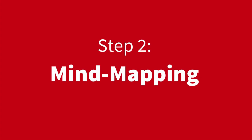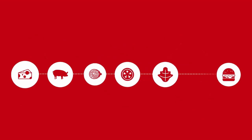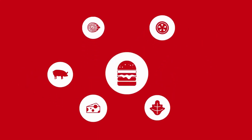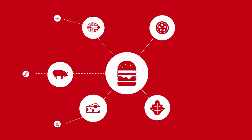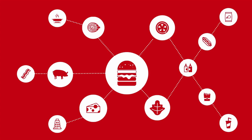Step 2: Mind Mapping. Next, develop creative connections to link your ideas together. Mind mapping is a productive and imaginative way to visualize relationships between your ideas. Start with your central idea in the middle and branch outward, writing all the connections you can think of. Keep branching off with as many connections as you can.